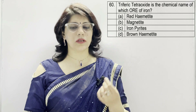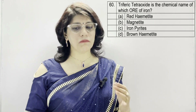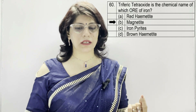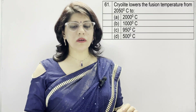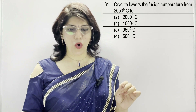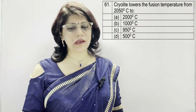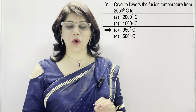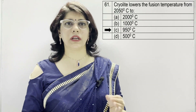In question number 63: triferic tetraoxide (Fe3O4) is the chemical name of which ore of iron? A: red hematite, B: magnetite, C: iron pyrites, D: brown hematite. The correct option is B — magnetite. Additionally, cryolite lowers the fusion temperature from 2050°C to 950°C.